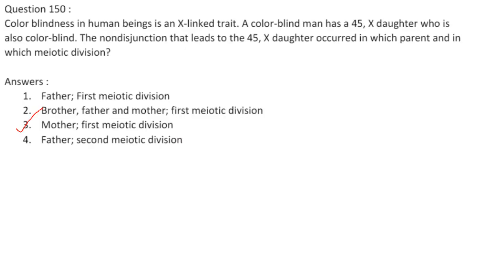Colorblindness in humans is an X-linked trait. A colorblind man has a 45X daughter who is also colorblind. For the daughter to be colorblind, the Xᶜ must come from the father. The mother must have undergone non-disjunction in meiosis I, resulting in gametes carrying no X chromosomes. Answer is option 3: mother and first meiotic division.